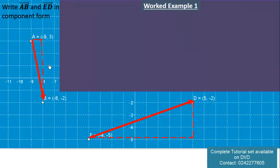Let's take one example. So we are writing AB and ED in the component form. So vector AB is equal to 1, negative 5. I will leave this for you as a trial, so write vector ED, vector ED in component form.